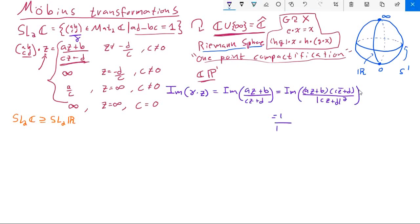And now the denominator just becomes the complex norm of CZ plus D squared. Now my denominator is purely real, so I can pull that out in front, and I get the imaginary part of expanding out the numerator. This becomes AC multiplied by the norm of Z squared plus AD multiplied by Z plus BC multiplied by Z bar plus B multiplied by D. Now, A and C are real, and so is the norm of Z squared, so the imaginary part of that is zero.